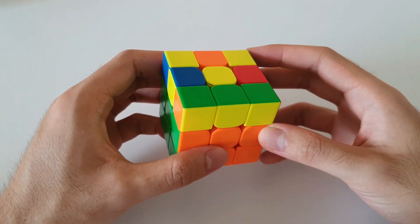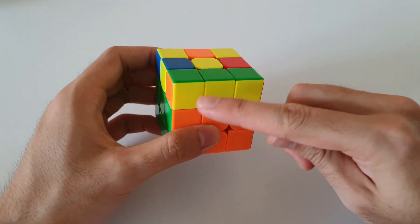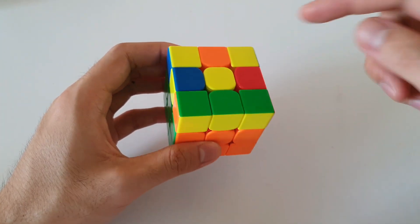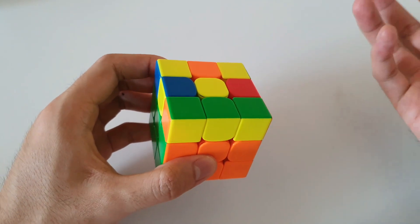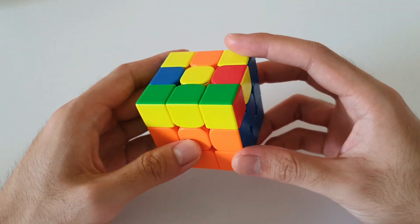So starting off with this case here, it's recognized with the pretty obvious 3x1 bar at the front and the two back corners are oriented. So for this case, quite a straightforward algorithm once again.